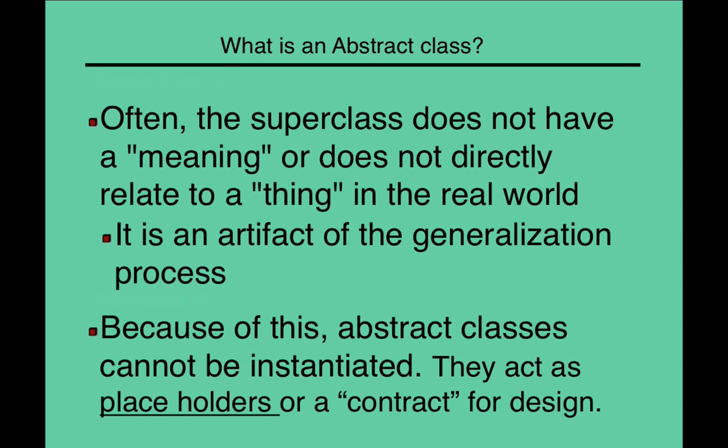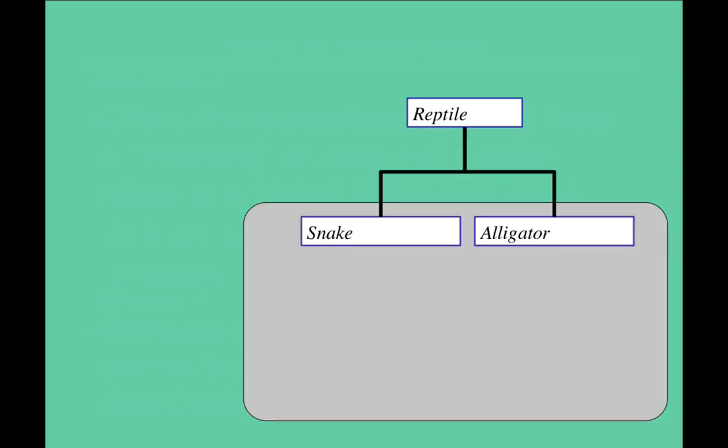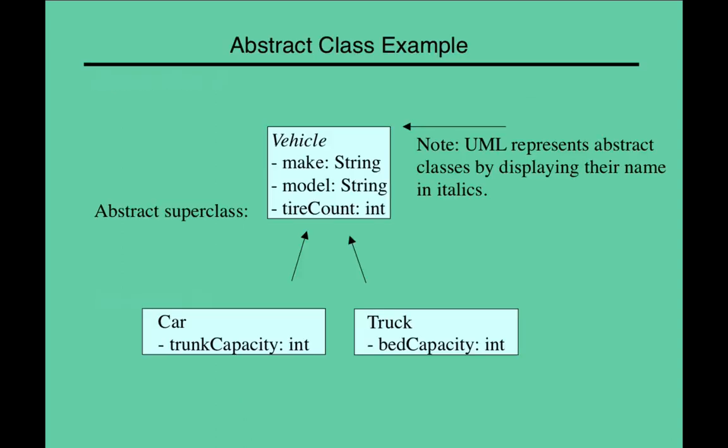So, a superclass doesn't usually have a meaning. As I mentioned earlier, an animal would be an abstract idea. A cat or a dog would be more concrete. And so, we would have the same idea here, a reptile. Nobody actually gets to be a reptile, but we know what snakes look like and we know what alligators look like. So, that's the abstract idea and the subclasses.